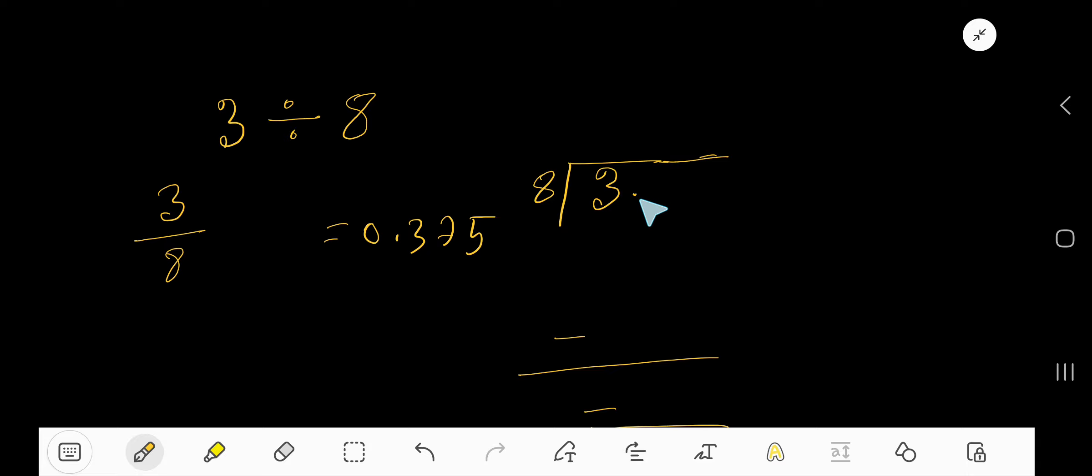That is, there is a whole number, so convert this three into a decimal number. Just place decimal and take any number of zeros according to your need. Actually, three point zero zero zero means three. Eight goes into three how many times? Zero times. Zero times eight equals zero.